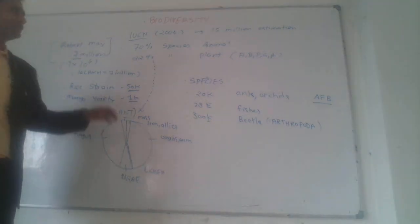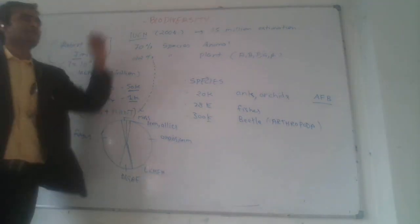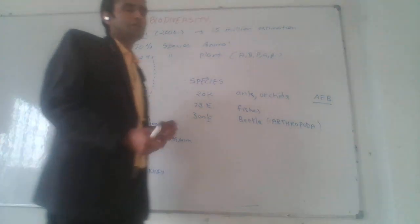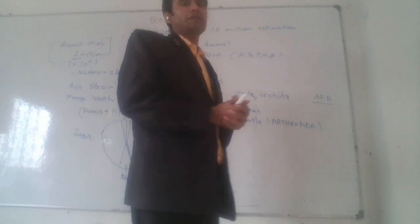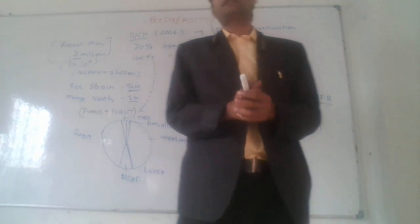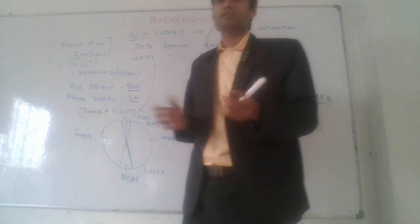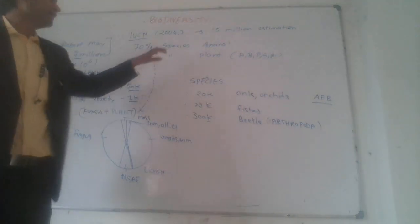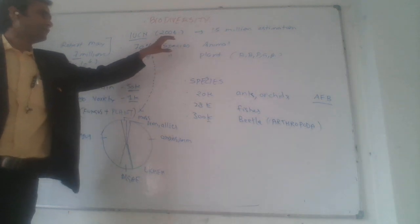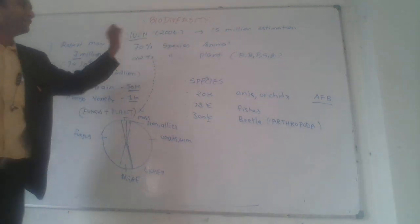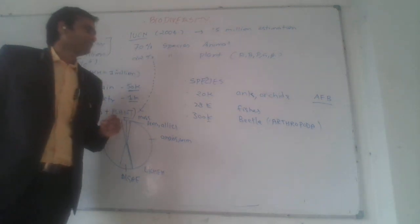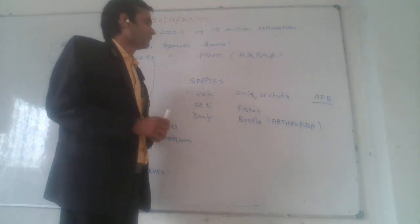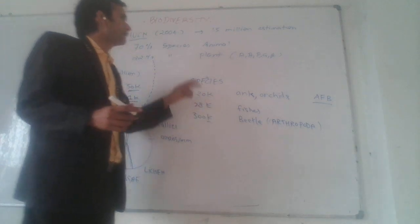Let's start with biodiversity. Diversity means different types of organisms found on the earth, like plants, animals, and fungi. We have already studied the five kingdom classifications. There is just statistical data about the diversification of plants and animals.